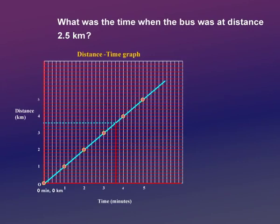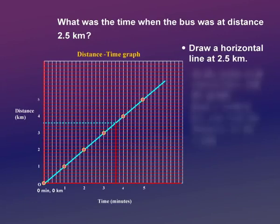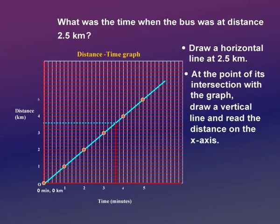What was the time when the bus was at a distance of 2.5 kilometers? To find this, draw a horizontal line at 2.5 kilometers. At the point of intersection of this line with the graph, draw a vertical line and read the value on the x-axis. You can read 2.5 minutes — so when the bus was at 2.5 kilometers, the time elapsed was 2.5 minutes. This is called interpolation, and this is the way a graph is interpreted.